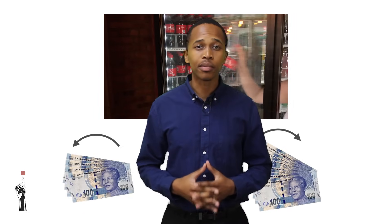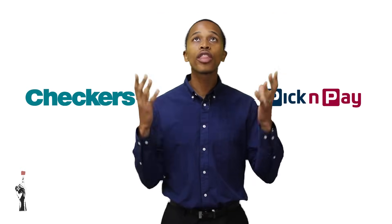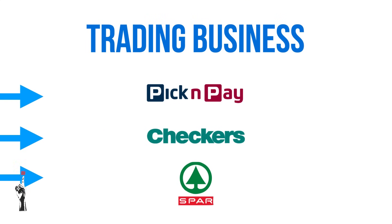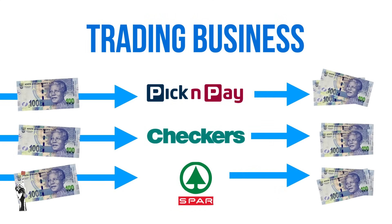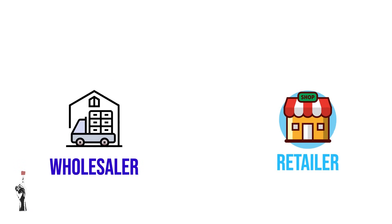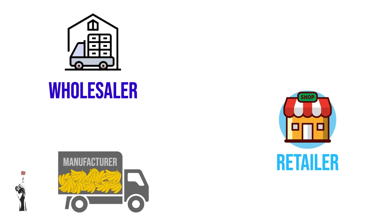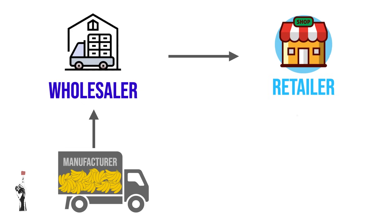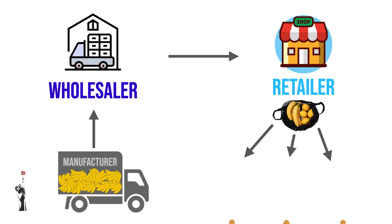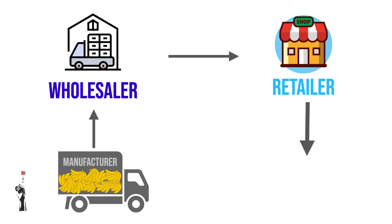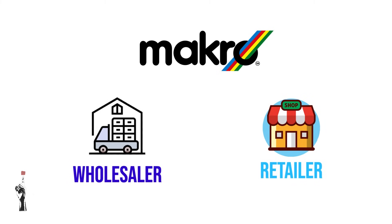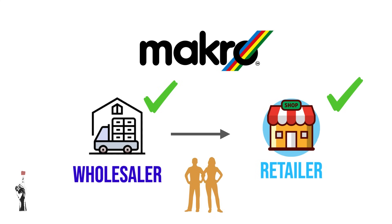I'm sure you're all familiar with trading businesses — any business where products are bought at a price and sold at a higher price. Examples of these are wholesalers and retailers. A wholesaler buys stock in very large quantities from manufacturers or importers and sells them to retailers. Retail businesses sell stock in small quantities directly to customers. Examples are Spar, Checkers and Pick n Pay. Macro is an example of a business that is both a wholesaler and a retailer, selling in bulk and also directly to customers in small quantities.